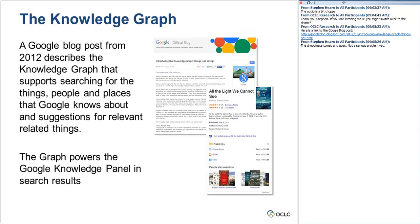These knowledge panels represent something that many of us aspire to be a part of. We'd like to see, for example, if you're seeing a book in a knowledge panel, it would be helpful to see whether your library holds it. This personalization built into the knowledge graph and the application is powerful, interesting, and useful. We're trying to find ways to deliver that kind of value to the network.